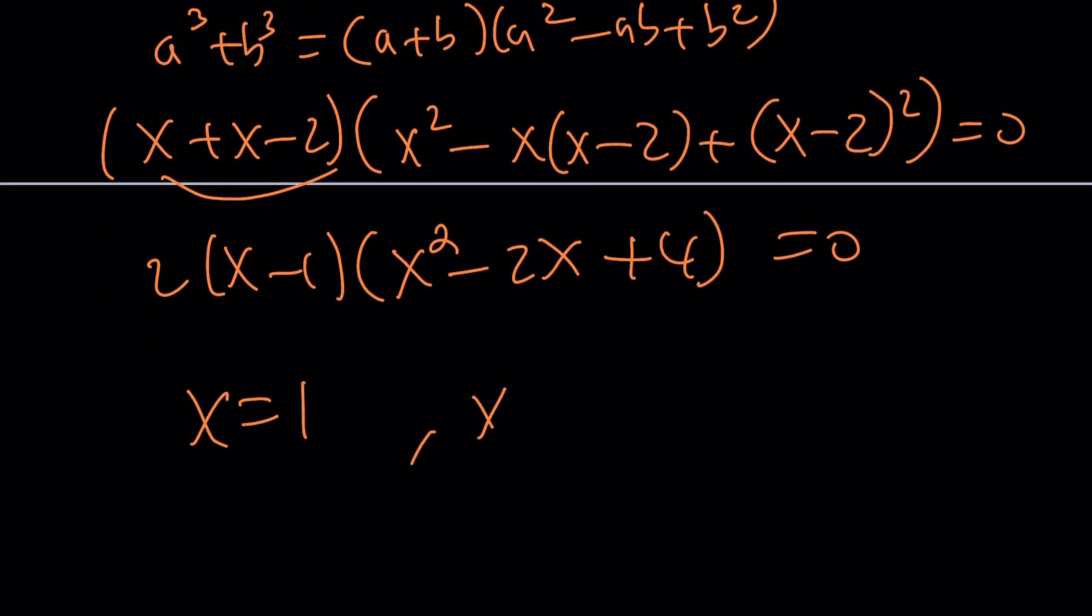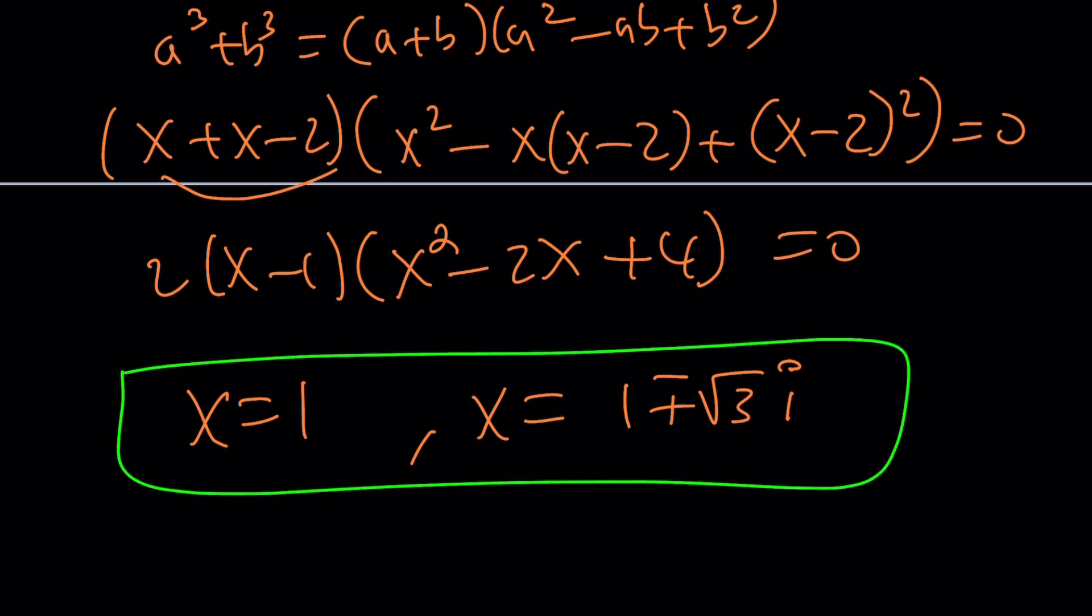And then this should give you the same solutions, x equals 1, x equals plus minus root 3i. And if you multiply the product x sub 1 and x sub 2 here, you're going to see that the product is actually equal to 4. All right? Let's go ahead and take a look at the graph, and we'll finish with that.